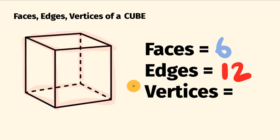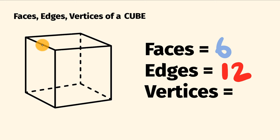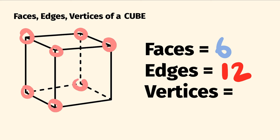Finally, to the number of vertices. These are the corners — the sharp bits, I guess, if you could think about them. So the number of vertices in a cube: we have one, two, three, four on the top, and one, two, three, four on the bottom. Four plus four — number of vertices, we have eight.